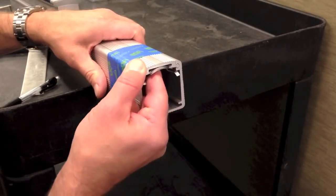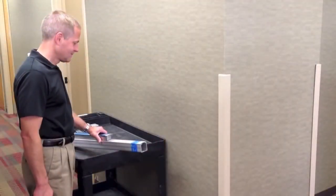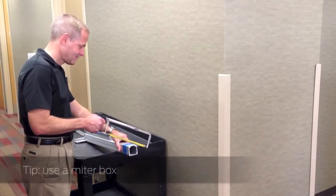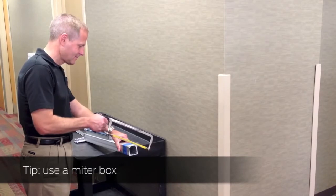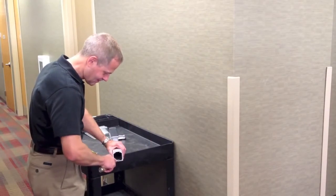Remove the anti-rattle clip. Carefully cut the exit device. Ensure the cut is square. Using a miter box can help. Remove any burrs with a file.